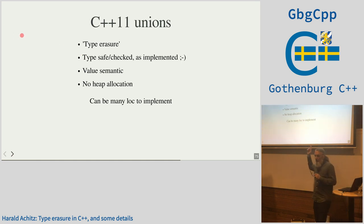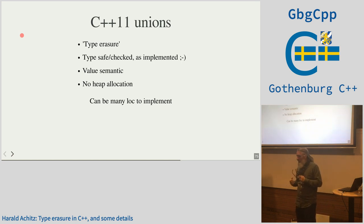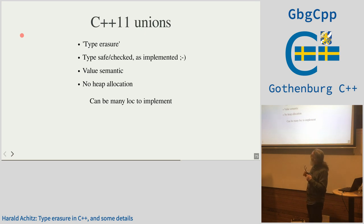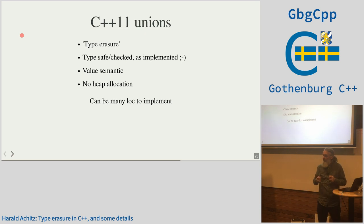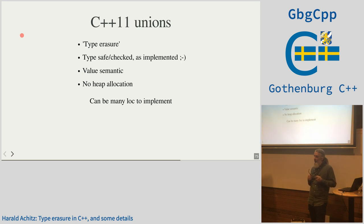With a variant we can avoid heap allocation — except for types that do it themselves, but then we don't care. Value semantics are there. But as I said, it's a little bit tedious to implement.